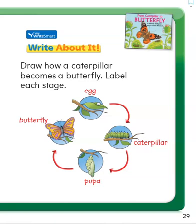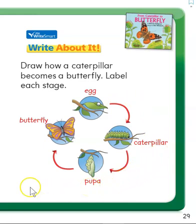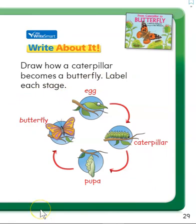You'll notice that this is the life cycle of a caterpillar. It starts with the egg, then a caterpillar, then the pupa or the chrysalis, and turns into a butterfly, and then the butterfly lays more eggs. That's what makes it a cycle — it keeps going on and on and on.